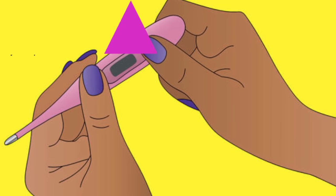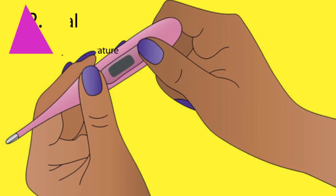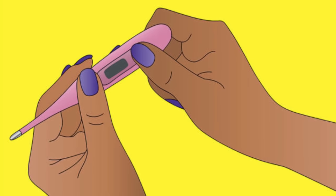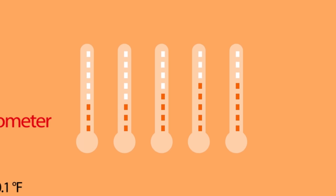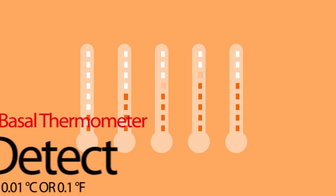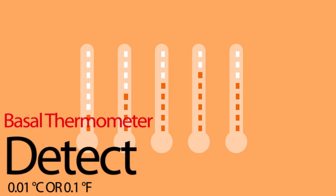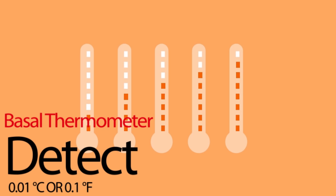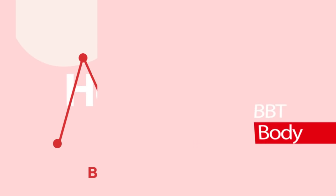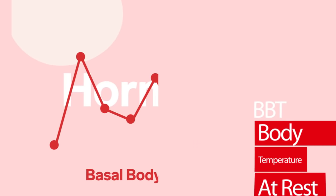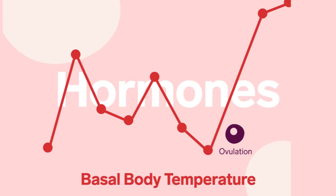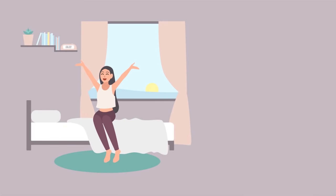Basal body temperature charting: for this method, you will need a digital thermometer or a basal thermometer, which is able to accurately detect small differences of about 0.01 degrees Celsius in body temperature. Basal body temperature, or BBT, is your body's temperature at rest.